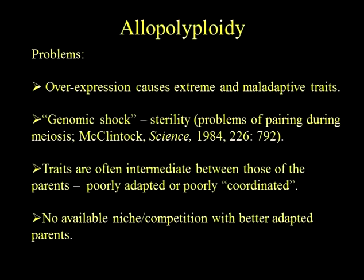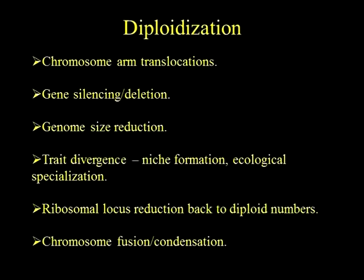Given a successful speciation event and establishment of a neopolyploid, a process of diploidization starts to take place. This is well documented, and we've been doing quite a bit of this kind of work in Nicotiana, because we have several groups of allopolyploids with different ages. So we could look at this process in a sequential way to see what happened and how soon. Gene silencing and deletion, as shown by Doug Soltis' work on Tragopogon, is very quick to start happening — even within a couple of generations, it's already well advanced, though not consistent in those populations.